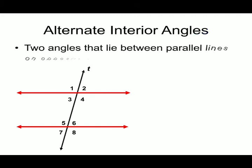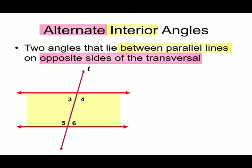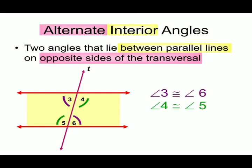Next: alternate interior angles — two angles that lie between parallel lines and on opposite sides of the transversal. The yellow area between the parallel lines shows the interior region. Angles 3, 4, 5, and 6 are interior angles. Alternate means opposite sides of the transversal, so angle 3 and angle 6 are one pair of alternate interior angles, and angle 4 and angle 5 are another pair. Their measurements are equal because they are alternate interior angles.